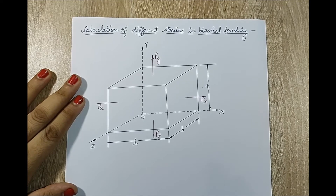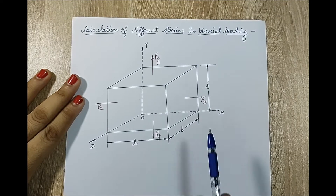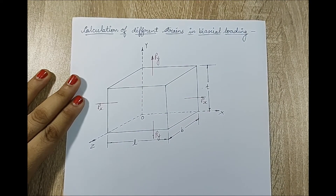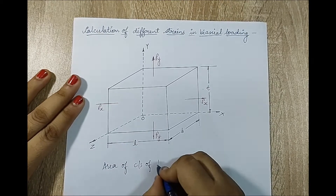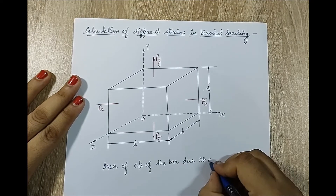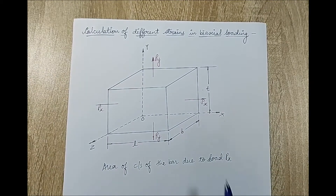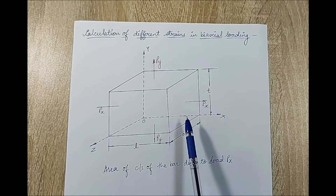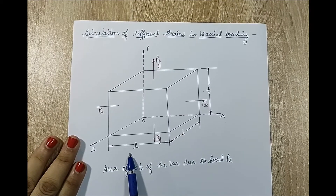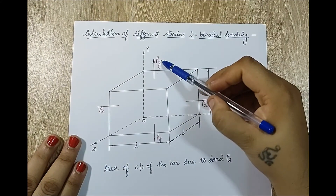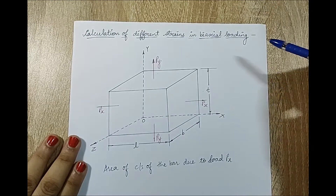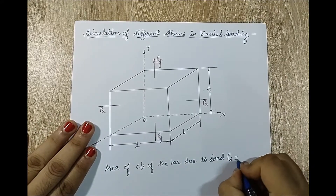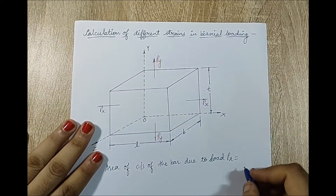Next we will calculate the different strains in biaxial loading. This figure has loading in the x and y axes; the dimensions are L, B and T. When Px is considered, L is the direction of linear strain and B and T become lateral dimensions. When Py is the load in focus, T becomes the linear dimension and B becomes lateral. The area of cross section on which Px acts is Ax = B·T.